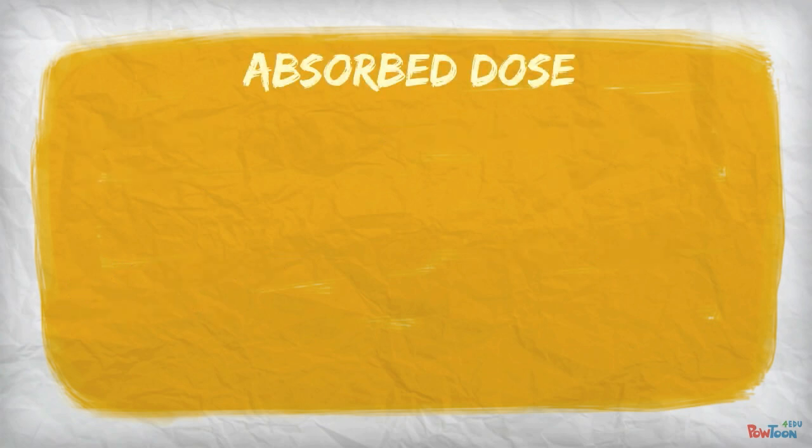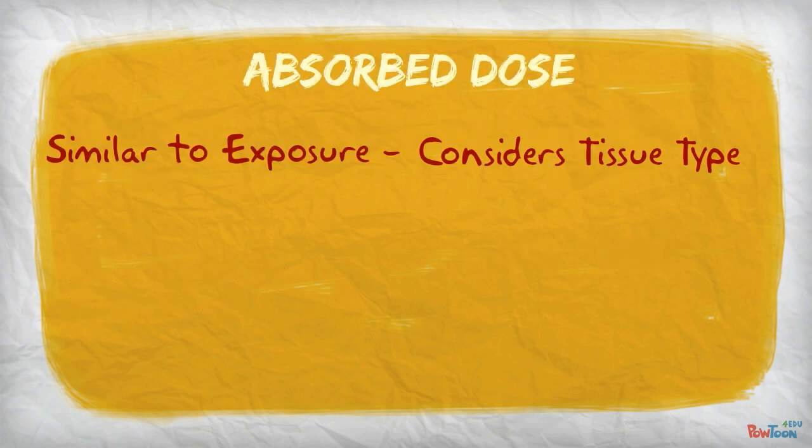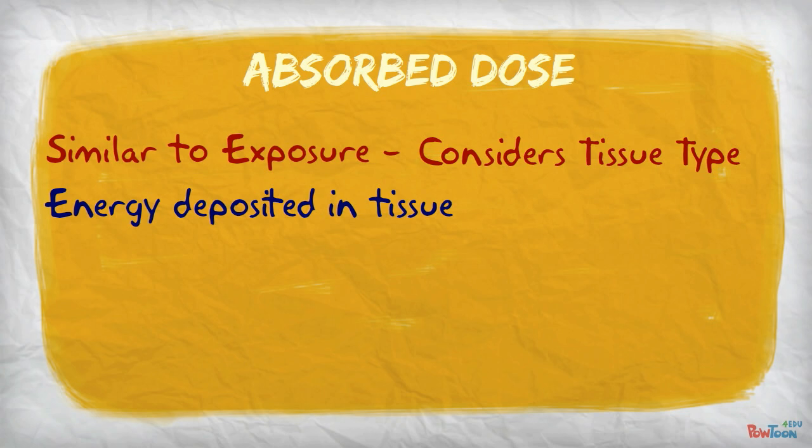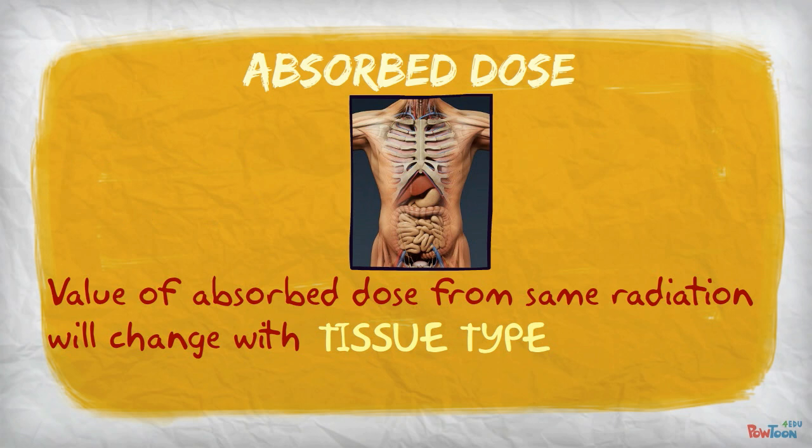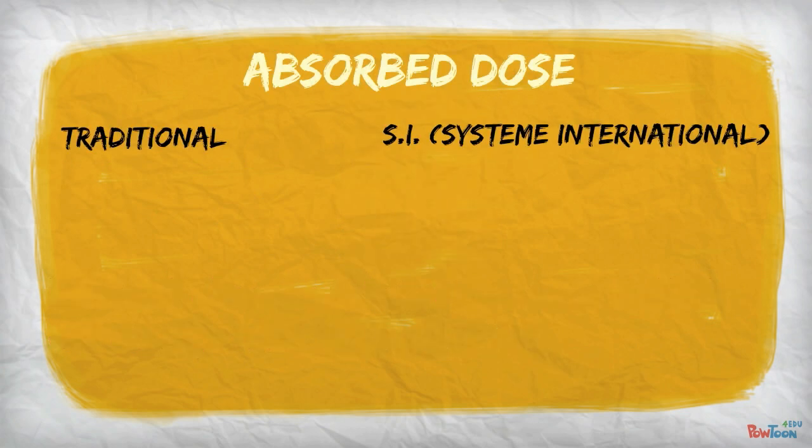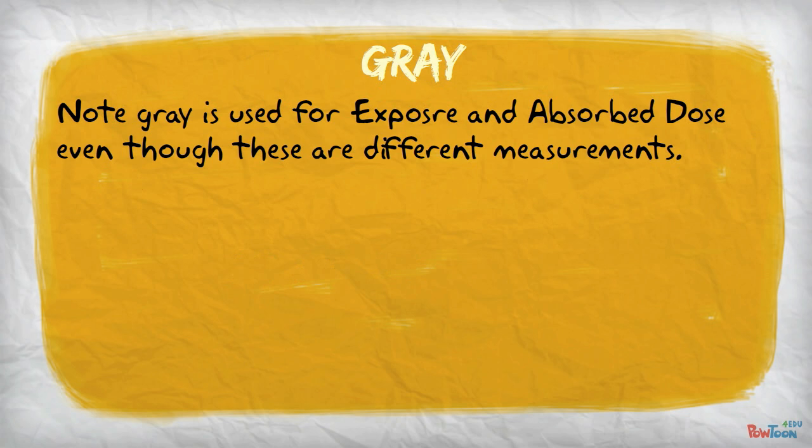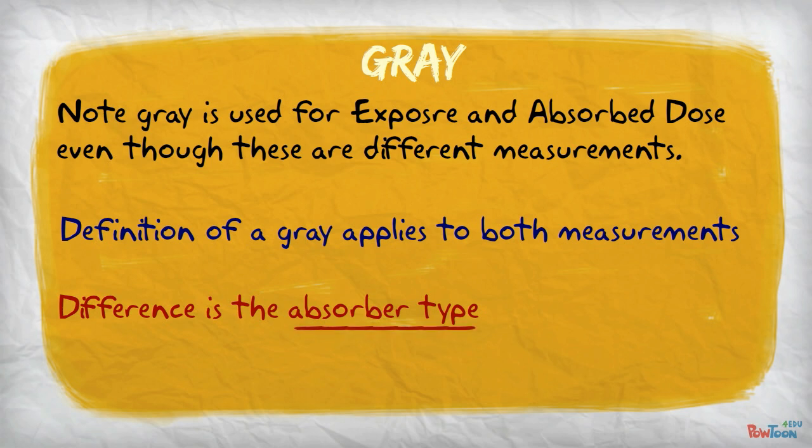Our next measurement is absorbed dose. It is similar to exposure, except it considers the absorber type. Thus, it is the energy deposited in tissue. Note that the value of absorbed dose from the same radiation will change as the tissue type is changed. The traditional unit for absorbed dose is rad, and the SI unit is gray. The conversion between the units is 100 rad equals 1 gray. Note that the gray is used for exposure and absorbed dose, even though these are different measurements. The definition of a gray fits both measurements, but remember, the difference is the absorber type.